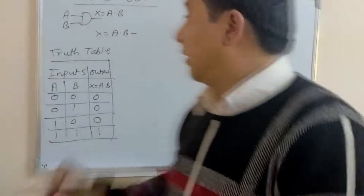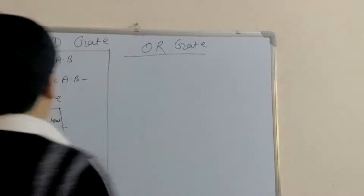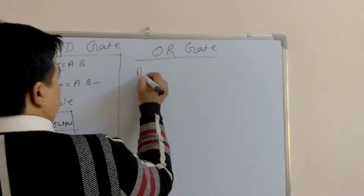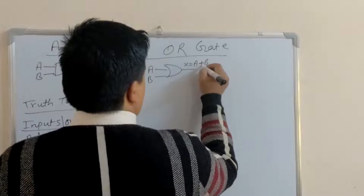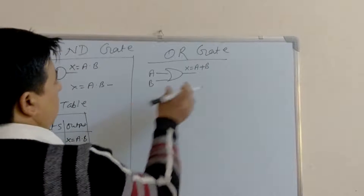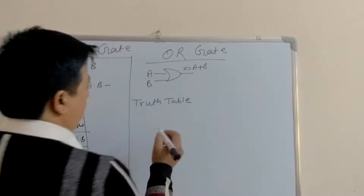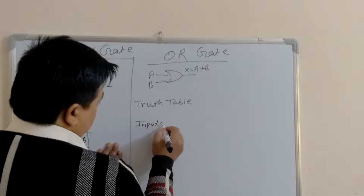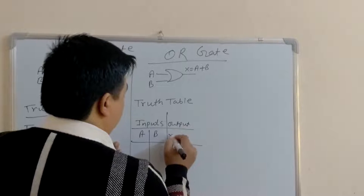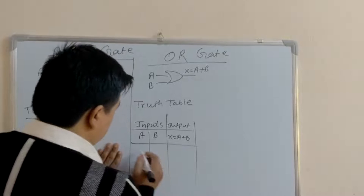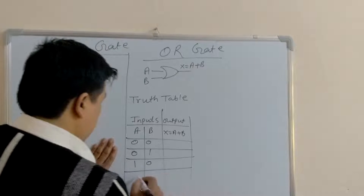Let's learn about OR gate. The graphical symbol of OR gate has inputs A and B. X is equal to A plus B — the plus sign represents the algebraic expression. Now let's draw the truth table of OR gate. Inputs A, B; output X equals A plus B: 0,0 — 0,1 — 1,0 — 1,1.